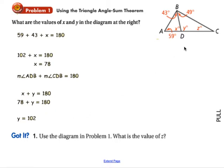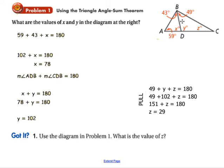So lastly, we can find angle z. Use the diagram, what's the value of z? Well, we know y, so we can go ahead and find the value of z by using our triangle angle sum theorem. 49 plus y plus z is 180. But we already found y to be 102. So if we solve that for z, we get 29 degrees.